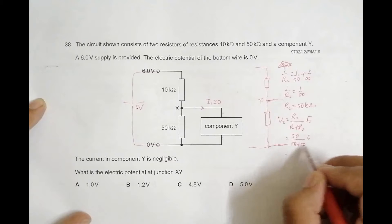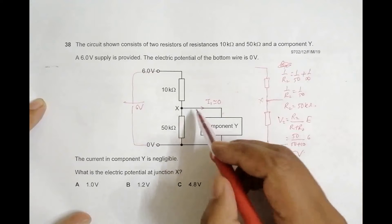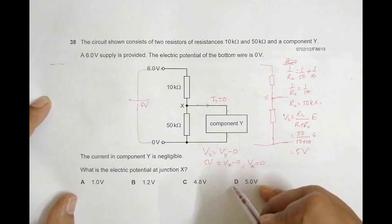So it should be equal to 50 by 60 times 6, so the 6 cancels, giving us 5 volts. So the answer is D.